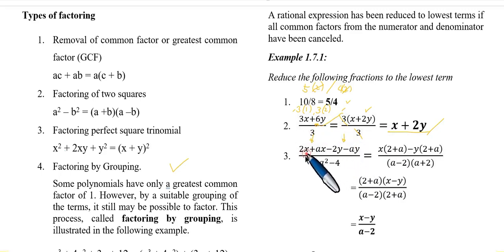First, group these two terms together. The factor is x times (2 plus a). Then this one, negative 2y minus ay. The common factor is y. Factor out the negative also.